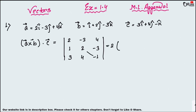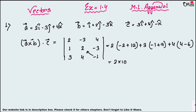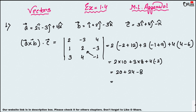Expanding: first term is 2 times (2×(−1) − 4×(−3)) = 2×(−2+12) = 2×10 = 20. Next term: −3 times (1×(−1) − 3×(−3)) = −3×(−1+9) = −3×8 = −24... wait, collecting terms gives 20 + 24 − 8, so 44 − 8 equals 36.